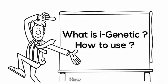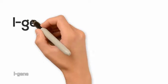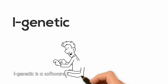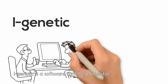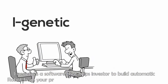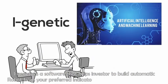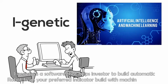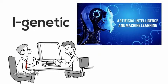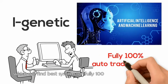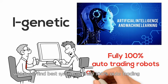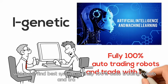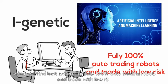What is iGenetic? iGenetic is a software that helps investors build automatic robots from their preferred indicators, built with machine learning, which will find the best system for fully 100% auto-trading robots and trade with low risk.